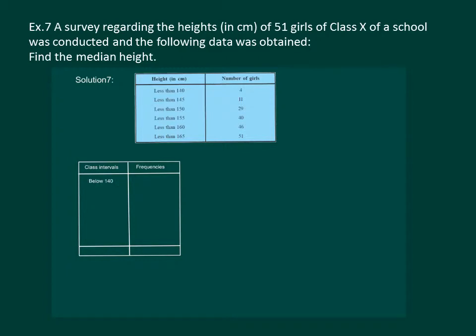So our first class interval can be below 140. Then next one should be from 140 to 145. Next will be 145 to 150, 150 to 155 is the next one. Next is 155 to 160 and the last is 160 to 165.